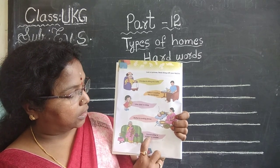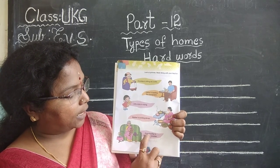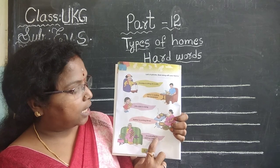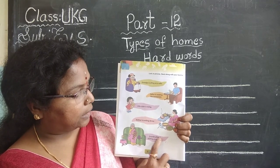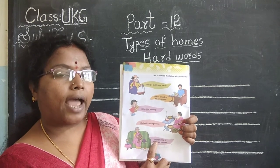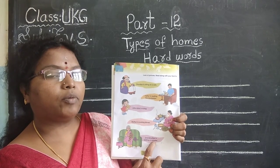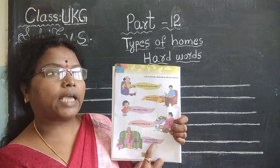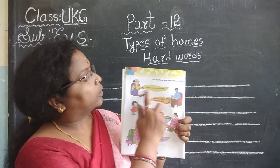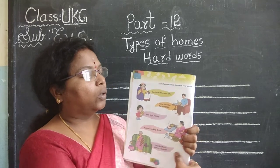Grandmother is knitting a sweater. G-R-A-N-D, grand. M-O-T-H-E-R, mother. I-S, is. K-N-I-T-T-I-N-G, knitting. A S-W-E-A-T-E-R, sweater. Like this, you have to read now, keeping the finger on the spelling and you have to read.